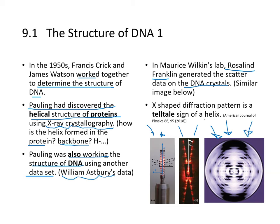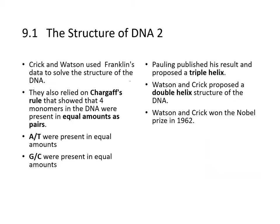This X-pattern diffraction is a telltale sign of a helix. Crick and Watson used Franklin's data to solve the DNA structure, and also relied on Chargaff's rule, which showed that the four monomers in DNA were present in equal amounts as pairs: A and T in equal amounts, G and C in equal amounts. Linus Pauling proposed a triple helix, whereas Watson and Crick proposed a double helix — and they were right. They won the Nobel Prize in 1962.